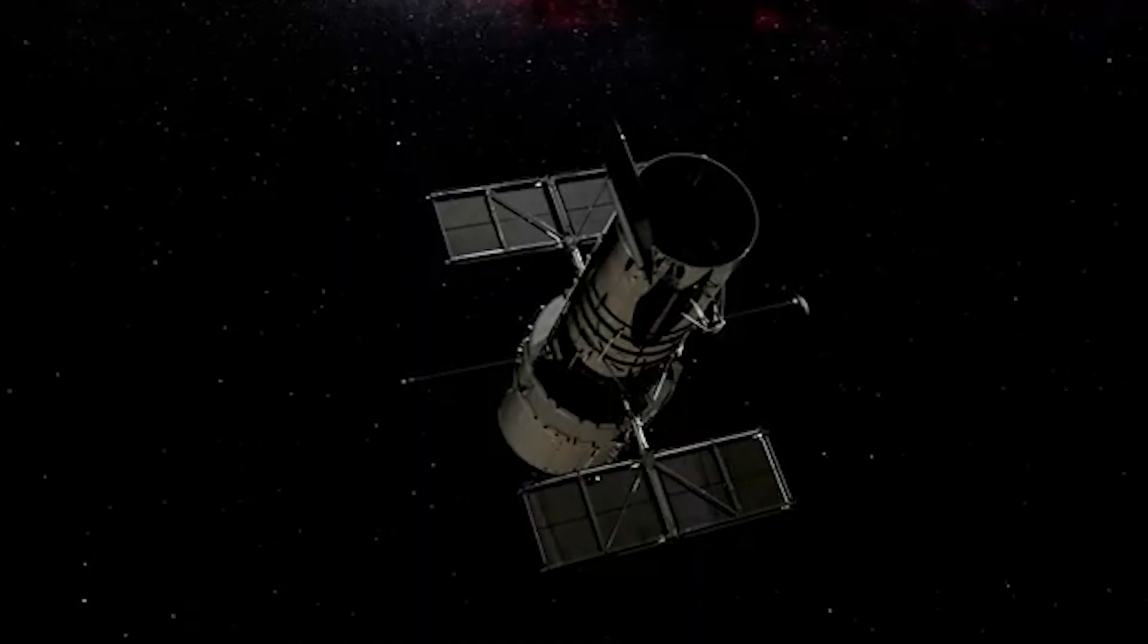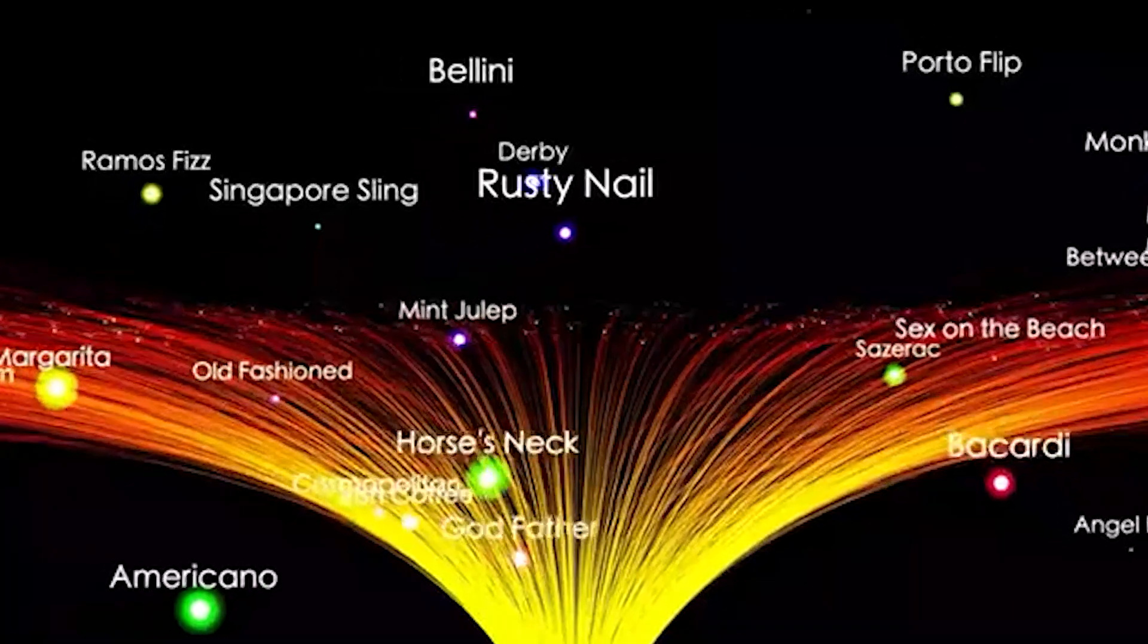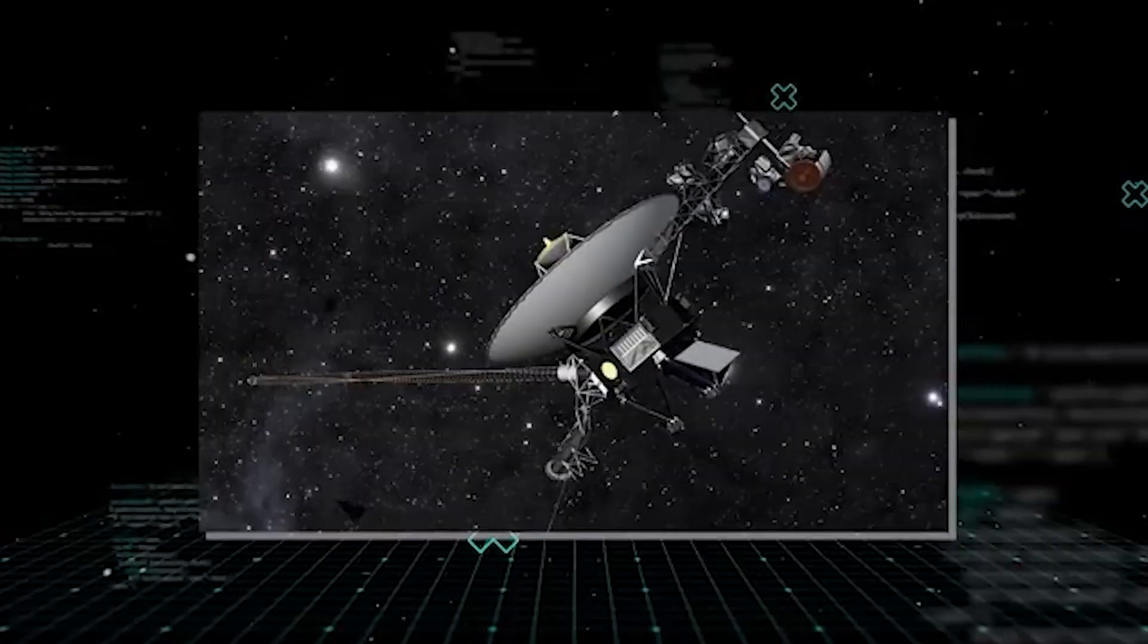The most distant human-made object in existence is NASA's Voyager 1 spacecraft, which has remarkably managed to reach interstellar space, crossing the boundaries of our solar system and venturing into the unknown.